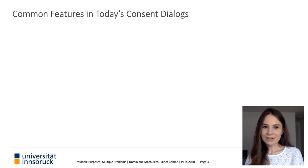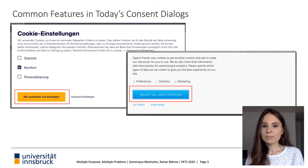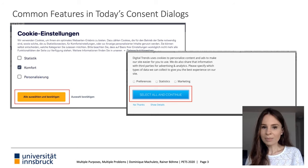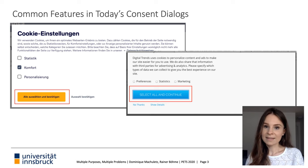When looking at consent dialogues and cookie banners of popular websites, we observed common patterns. First, the user often has to choose between multiple purposes. Second, we observed some cookie banners with a highlighted default button which automatically accepts all purposes regardless of whether any checkboxes have been selected before the user clicks this button. This button does not increase choice options but has the potential to trick users into accepting all purposes against their will.